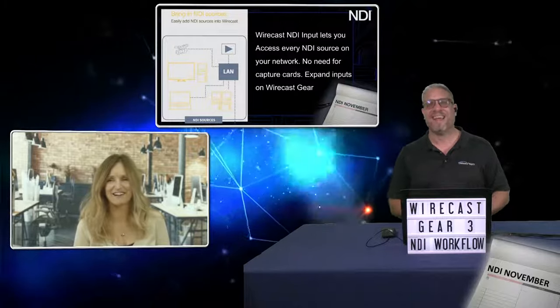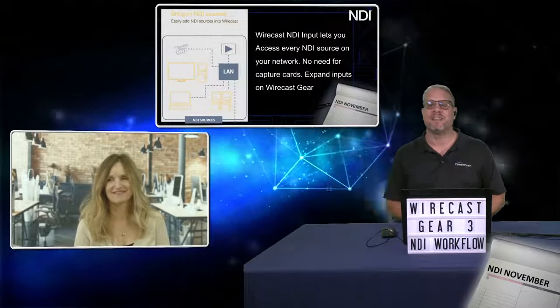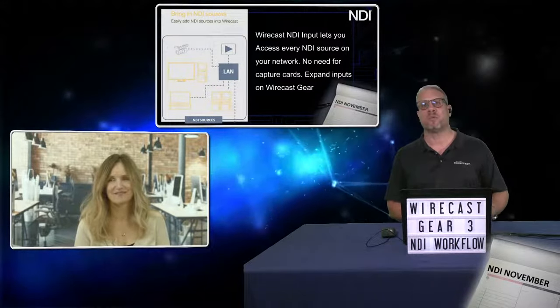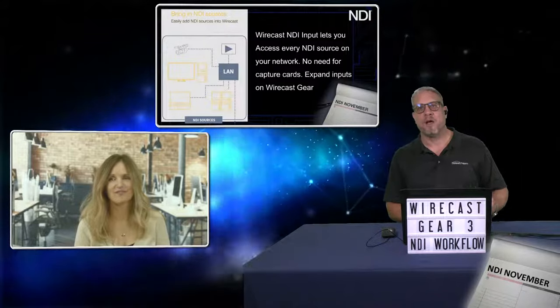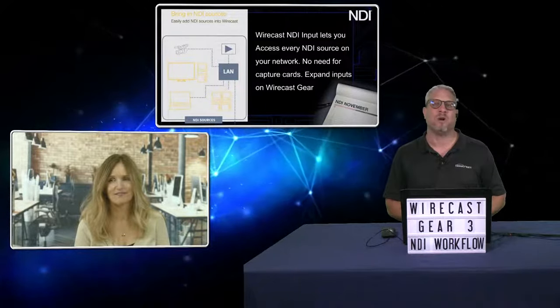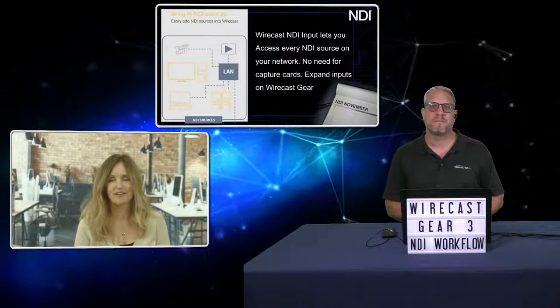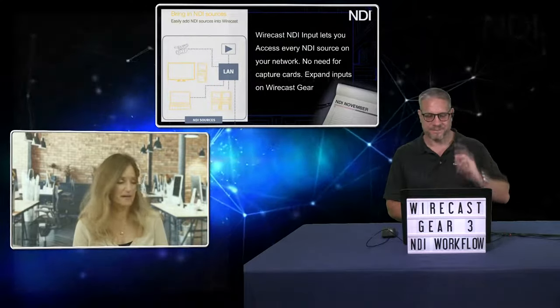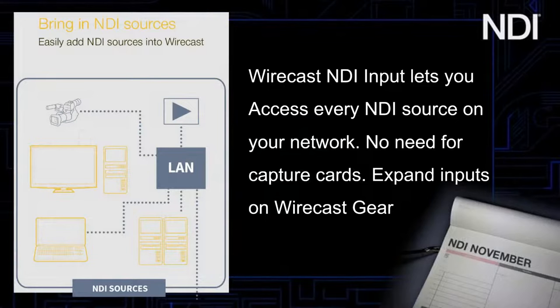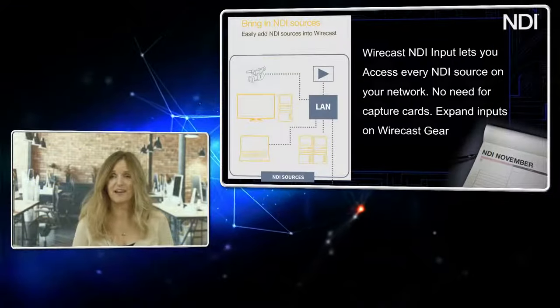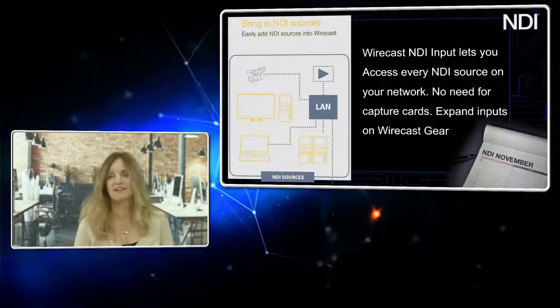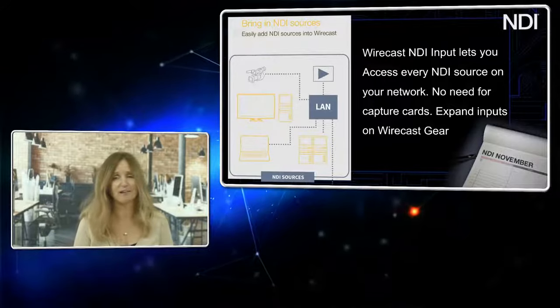Right. Yeah, it starts to get blurry there. All of this stuff does start to grow together. But I think the first thing to really talk about is the NDI sources and the input of bringing all these different things into a Wirecast workflow. Yeah, and it can be anything from a camera, even phones. I've got a little app on my phone, NDI HX, and can bring that into Wirecast easily. So anything on your LAN that's sending out NDI.